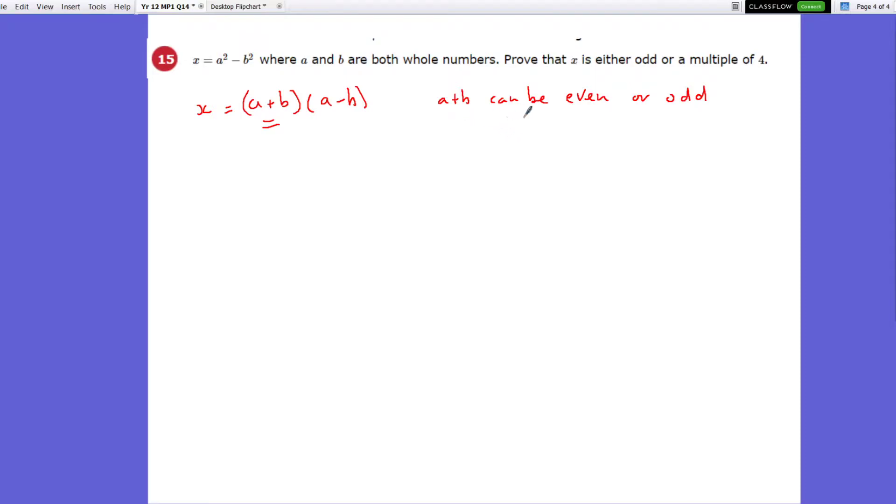Right, so we'll look at both cases and see what we can work out for x. So let's just look at if a plus b is even, then a and b both must be even, or both must be odd. That's the only way you can end up with an even number.